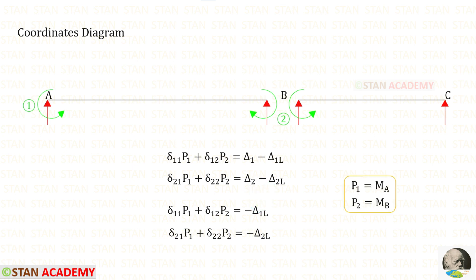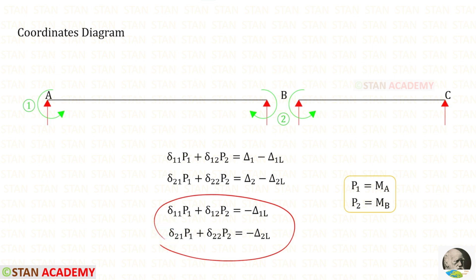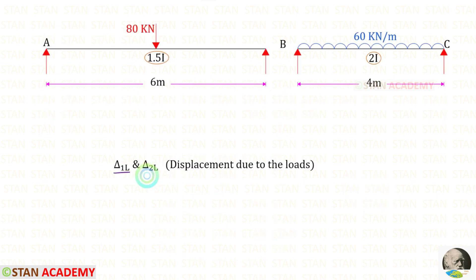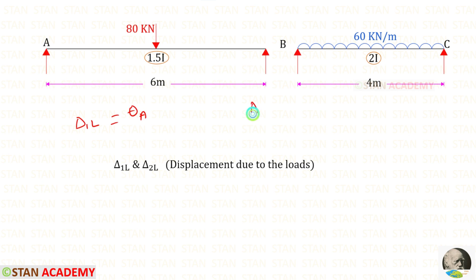MA is our first coordinate, so P1 will be MA. MB is our second coordinate, so P2 will be MB. In these two equations, first we are going to find delta 1L and delta 2L, which are the displacements due to the loads. Since we have removed the moments, delta 1L and delta 2L will be slope values. Delta 1L is the slope at point A, theta A, and delta 2L is the slope at point B, theta B.